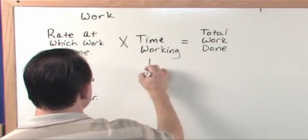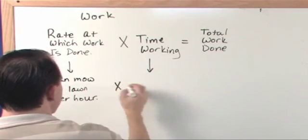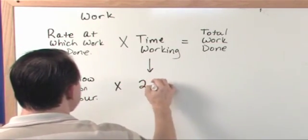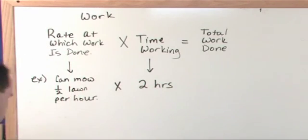The time working would just be, just like what we were talking about, it could be just like two hours, let's say. So let's say I tell somebody I can mow half of a lawn per hour.